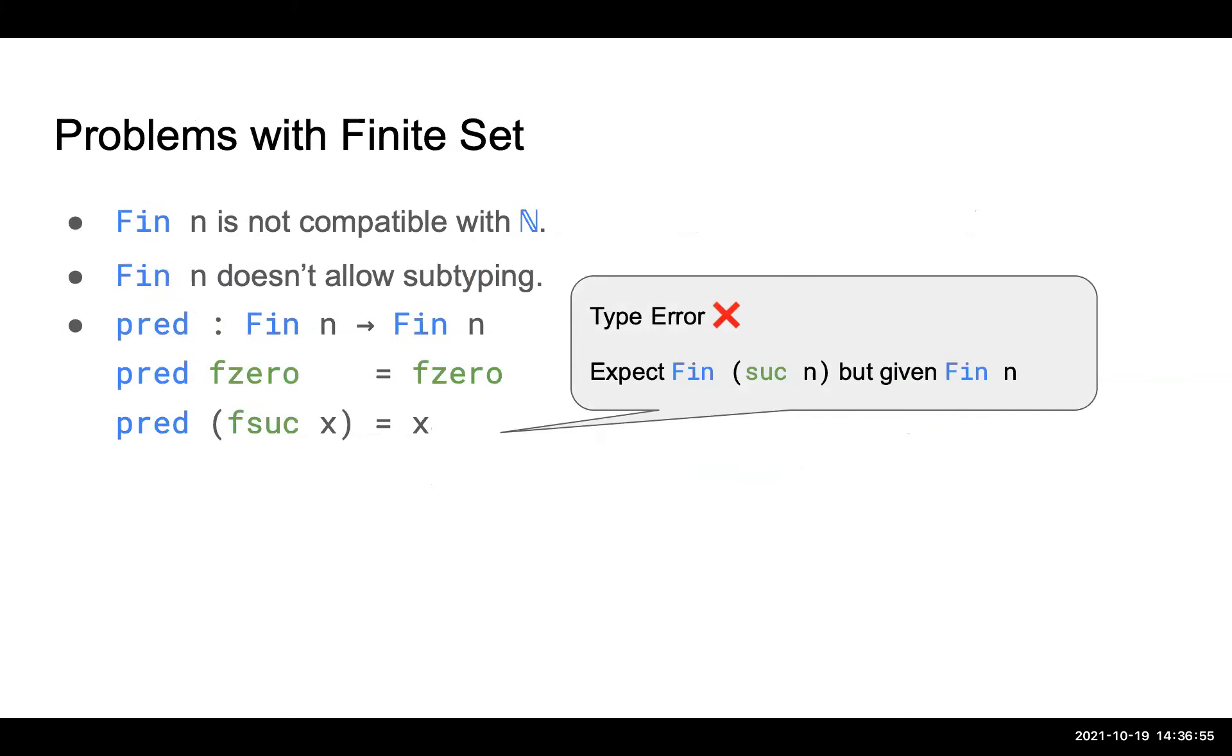Okay, so there's some problems with this Fin n type. The first one is, Fin n is not compatible with nat, even though we know clearly from its informal explanation that Fin n is just a subset of nat. But it's a completely new definition. So any function defined on nat needs to be redefined for Fin n all over again. And you might need some conversion between Fin n and nat to make your code work. Another thing is that Fin n doesn't allow subtyping.